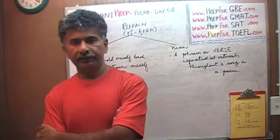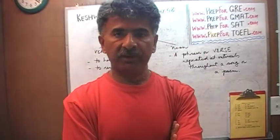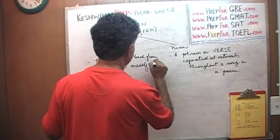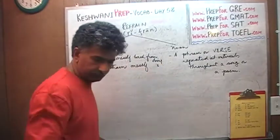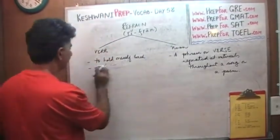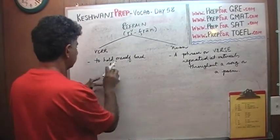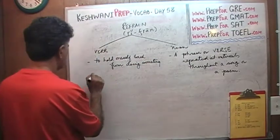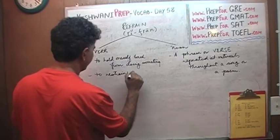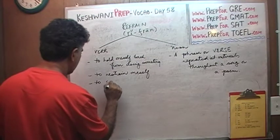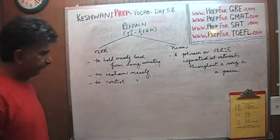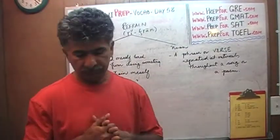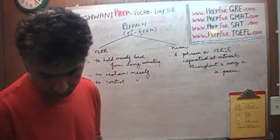So refrain has two meanings: one is the verb — to hold yourself back from doing something, to control yourself. Please refrain from smoking. Refrain from swearing — do not swear, control yourself. And as a noun, a refrain is a repeated line in a song or poem.